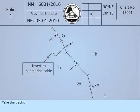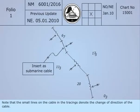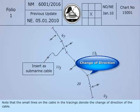Take the tracing. Note that the small lines on the cable in the tracing denote the change of direction of the cable.